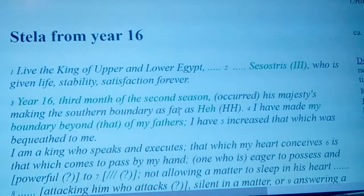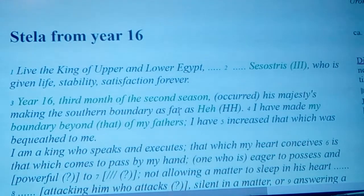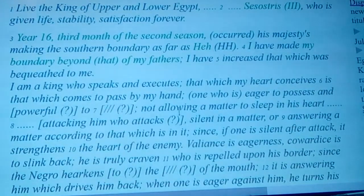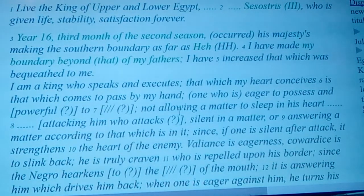Let's look at the stele from year 16. 'Live the King of Upper and Lower Egypt, Sesostris III, who is given life, stability, and satisfaction forever. Year 16, the third month of the second season, occurred his majesty making the southern boundary as far as He, having made my boundary beyond that of my father's.'